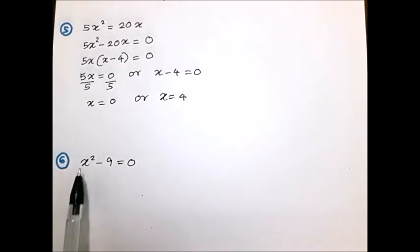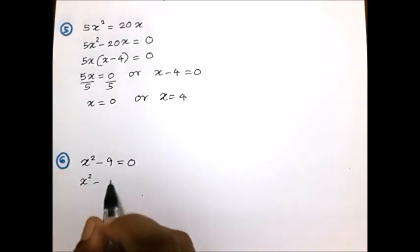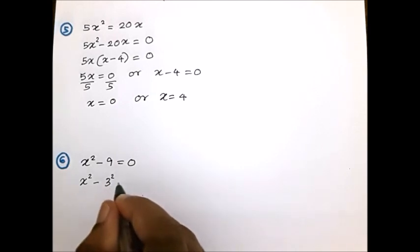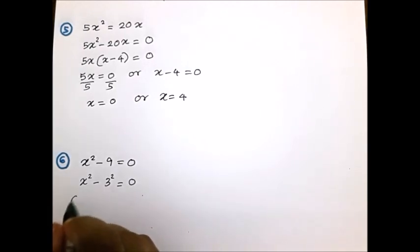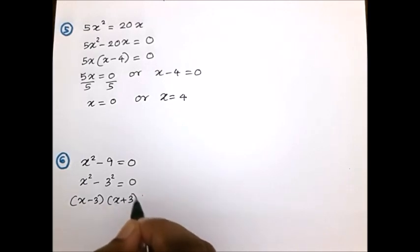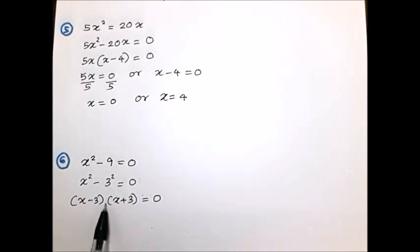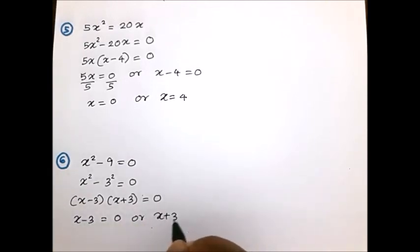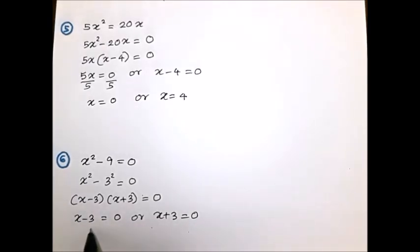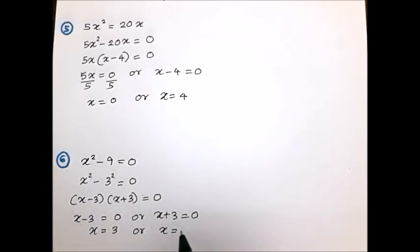Let's start the sixth example: x² - 9 = 0. Factorize the left side — x² can be written as x², and 9 as 3². This is a difference of two squares, so the factors are (x - 3)(x + 3) = 0. Setting each factor to 0: x - 3 = 0 gives x = 3, and x + 3 = 0 gives x = -3. The solution is x = 3 or x = -3.